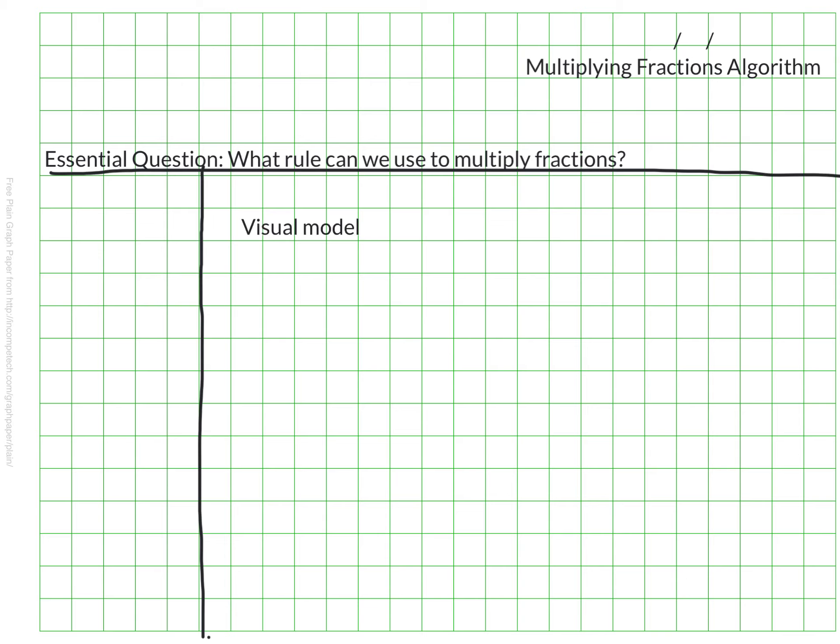We have already learned a visual model that we can use to represent multiplying fractions. This model is known as the area model, although I often call it the brownie pan model because visually it looks like we're cutting up pieces of brownie in a pan.